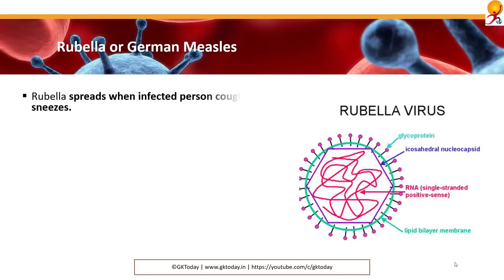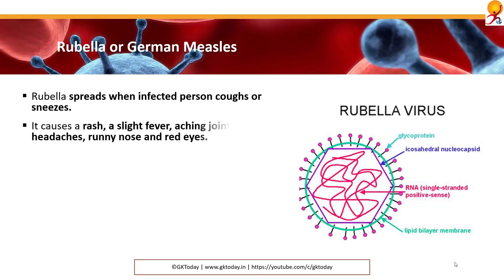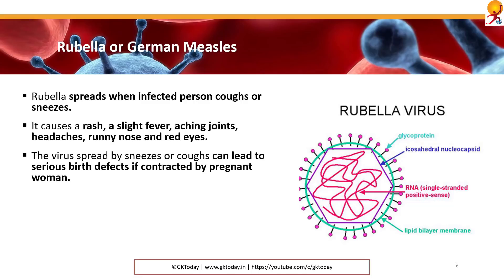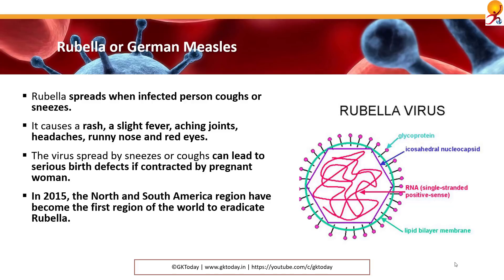Rubella, or German measles: rubella spreads when infected people cough or sneeze. It causes rash, a slight fever, aching joints, headaches, runny nose and red eyes. The virus can lead to serious birth defects if contracted by pregnant mothers. In 2015, the North and South America region became the first region of the world to eradicate rubella, with no homegrown cases in five years in those regions.